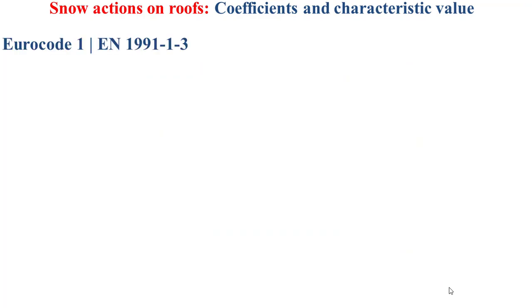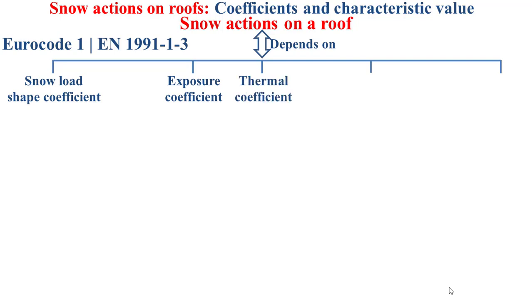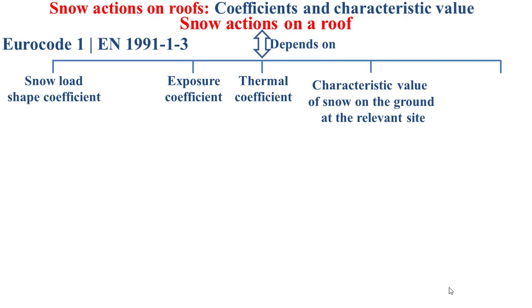Now I will talk about the snow action coefficients and characteristic value. Based on EuroCode 1 standards associated to European standard EN 1991-1-3, snow actions on a roof depend on four coefficients and one characteristic value: the snow load shape coefficient, the exposure coefficient, the thermal coefficient, the characteristic value of snow on the ground at the relevant site, and the coefficient for exceptional snow load.